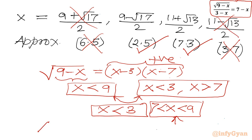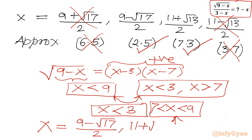So our final answer is x equals (9 minus root 17) over 2 and x equals (11 plus root 13) over 2. These are the two real solutions satisfying our radical equation.